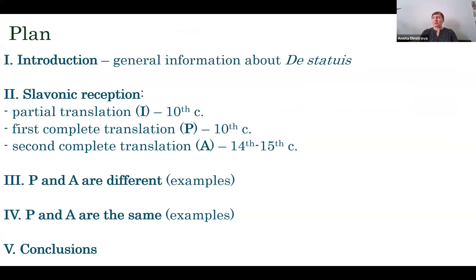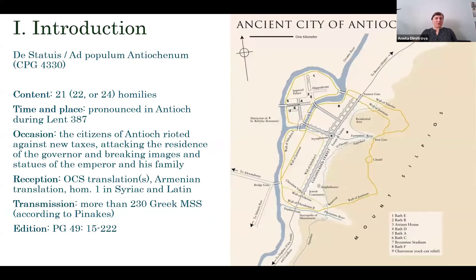I'll try to say something about the most important and earliest translations of the Homilies on the Statues in Old Church Slavonic, but especially I will focus on the complete ones. I'll say several words about these homilies, and then I'll say something about the complete translations — first the earliest ones and then the later one. I'll give some examples of how the two complete translations are different, but also how they are the same in some ways, and I'll try to draw some conclusions.